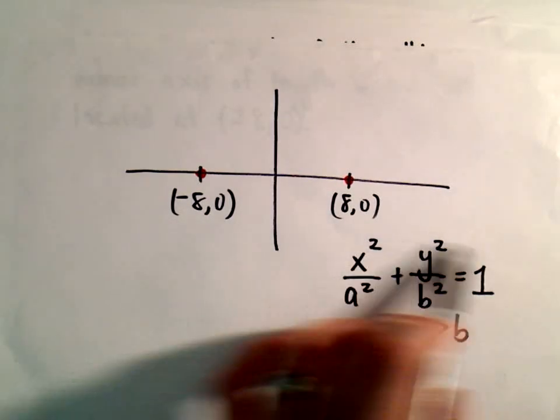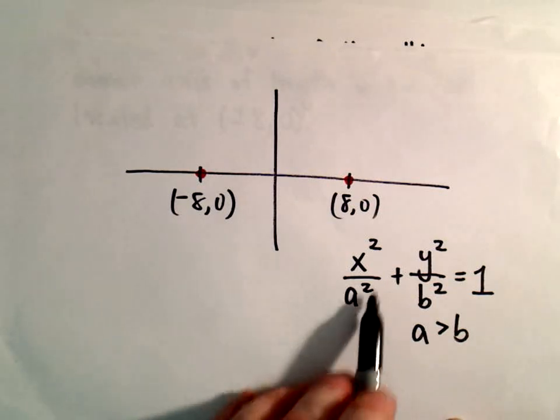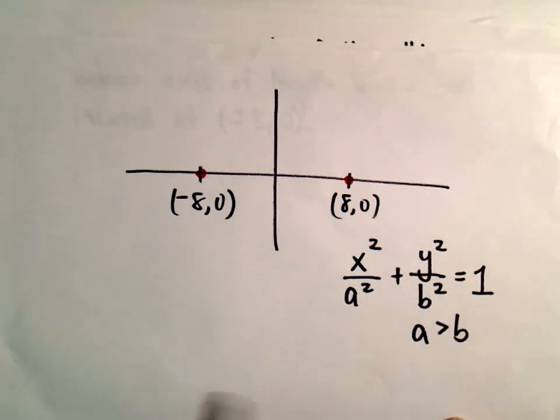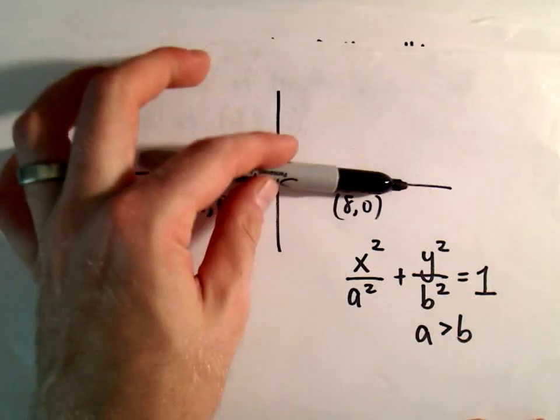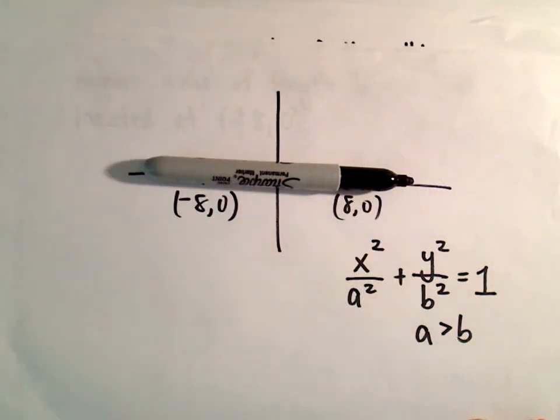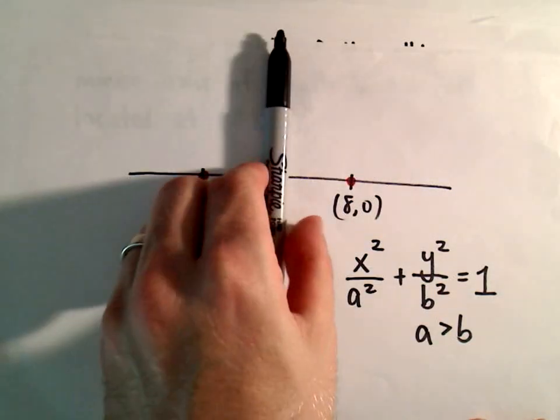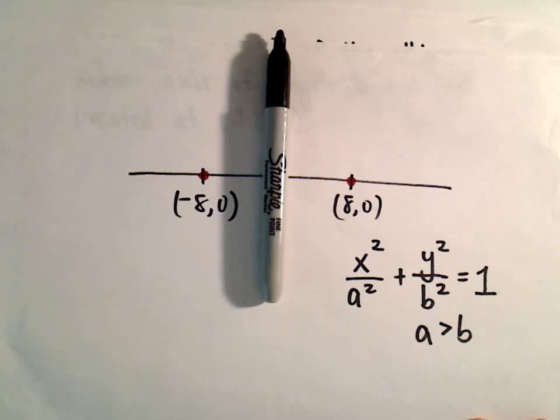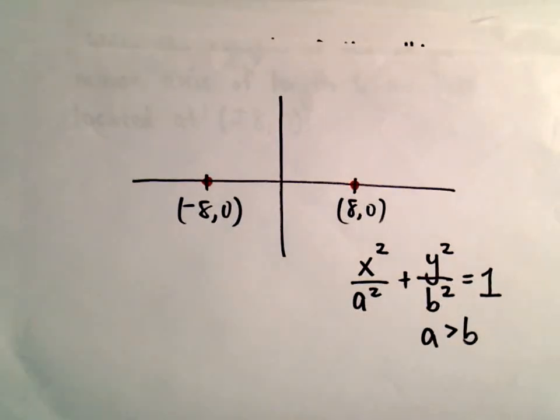The formula always looks the same. The only difference is if the number underneath x² is bigger, it's going to have a horizontal major axis, and if the number underneath y² is bigger, it's going to have a vertical major axis. That's how I think about it.